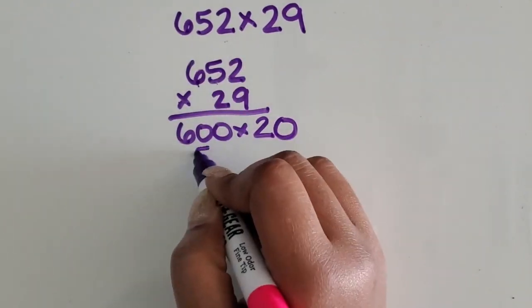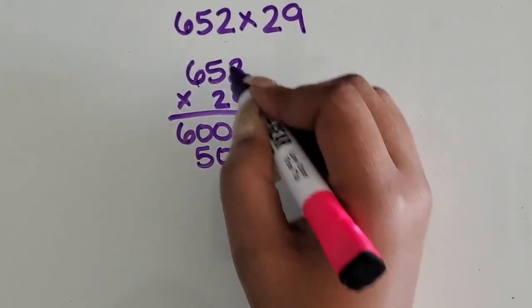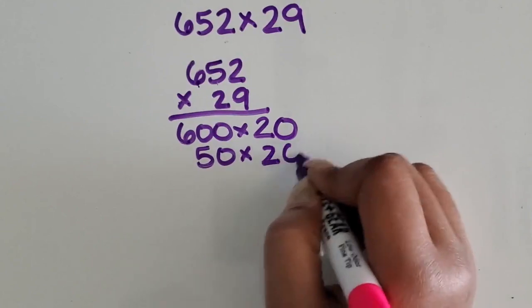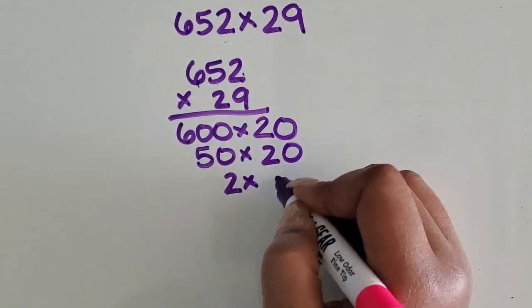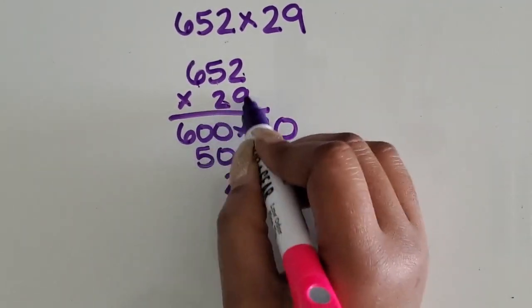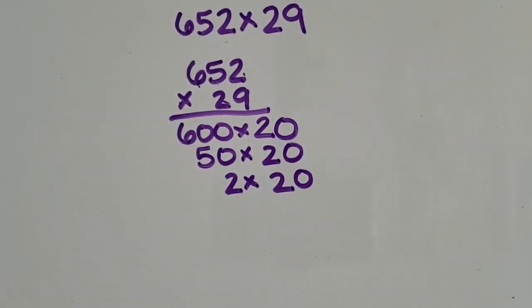Then we know the 5 is in the tens place, so that's 50. And again, we're multiplying it by 20. And then the 2 is in the ones place, and we're going to multiply that 2 by the 2 in the second number, which has a value of 20.